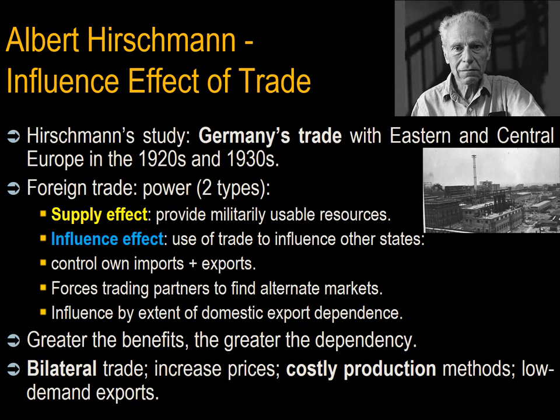Albert Hirschman studied Germany's trade with Eastern and Central Europe in the 1920s and 30s to reveal how dependence could be used for power politics. There are two types of effects in foreign trade: the supply effect, where a country exports strategic goods like oil or minerals, and the influence effect, where a powerful market can deny access to other countries, disrupting their domestic economies and having an electoral effect on their leaders. The greater the benefits of a trading relationship, the greater the dependency. In a bilateral trade relationship, the market holder can increase prices, affect production methods, and control exports.